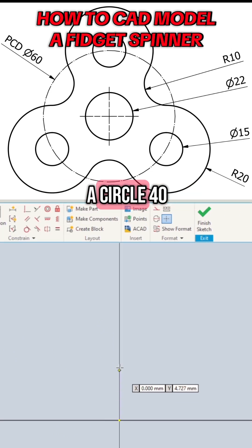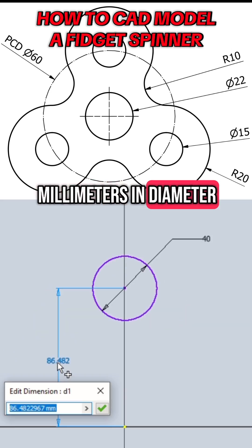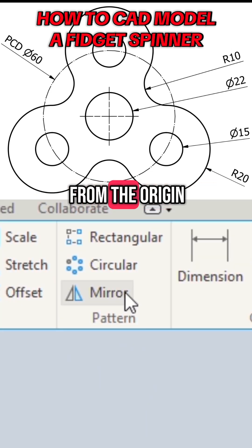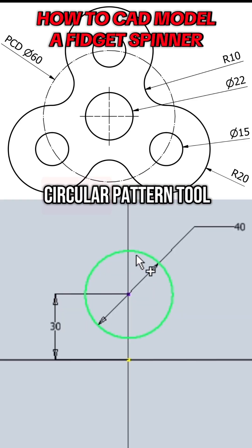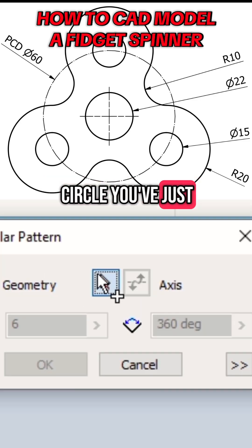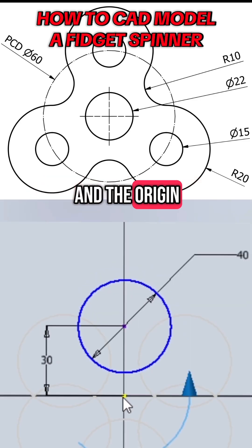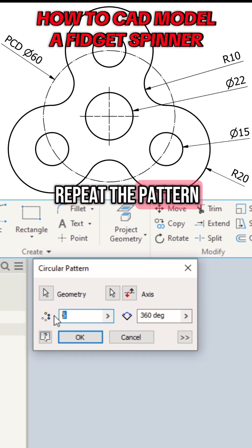Start by sketching a circle 40 millimeters in diameter, 30 millimeters up from the origin. Then select the circular pattern tool, select the circle you've just sketched as the geometry and the origin as the axis. Repeat the pattern three times.